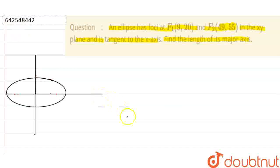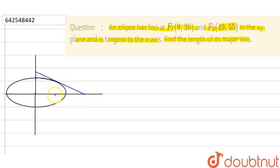Let's say we are drawing a tangent on the ellipse. We have a tangent. Now, let's say this point is F1, this point is F2, and let's say this point of tangency is P.